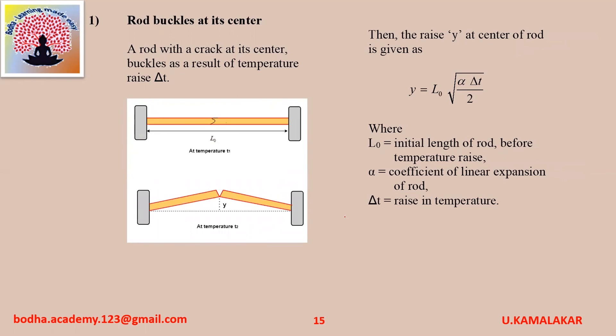Rod buckles at its center: consider a rod with a crack at its center; it buckles as a result of rising temperature delta T. Then the rise Y at the center of the rod is given as Y equals L0 into square root of (alpha delta T divided by 2), where L0 is the initial length of the rod before temperature rise, alpha is coefficient of linear expansion of rod, and delta T is rise in temperature.